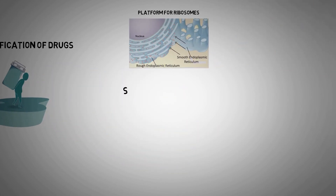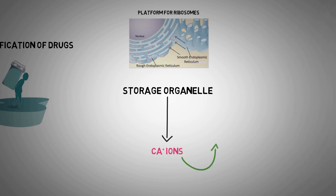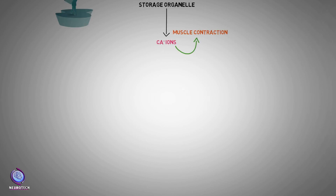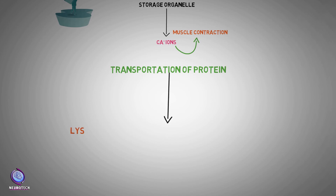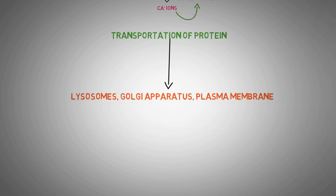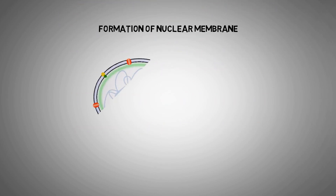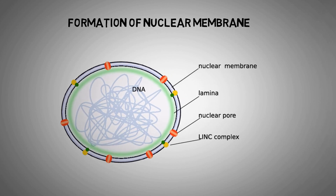The smooth endoplasmic reticulum acts as a storage organelle for storing calcium ions when they are needed for muscle contraction. Endoplasmic reticulum is also involved in the transport of proteins and other carbohydrates to other organelles, including lysosomes, Golgi apparatus, and plasma membrane. They also help in the formation of the nuclear membrane during cell division.